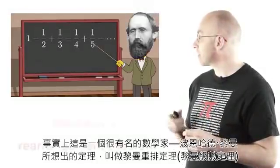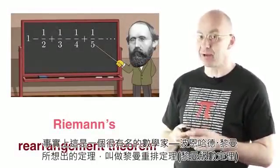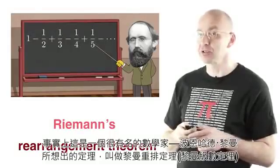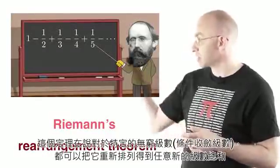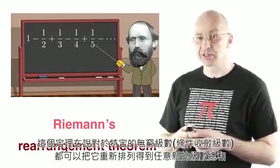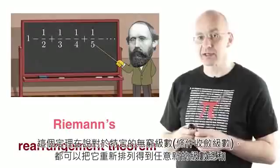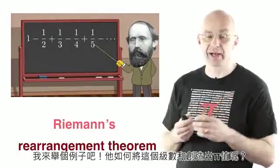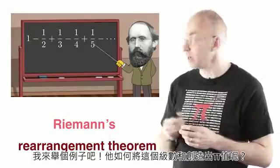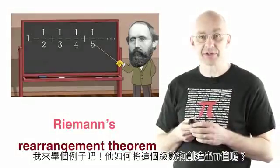We just saw that we can rearrange this series into another series with a different sum. And actually there's a famous mathematician, Riemann, Bernhard Riemann, who came up with a theorem, the Riemann rearrangement theorem, which says that in this case of this particular series, you can rearrange this thing into series that add up to anything you want. For example, pi. And I'm going to show you how that is done, how he makes up these different sums.